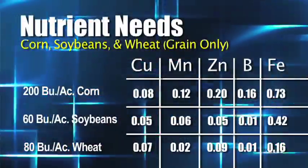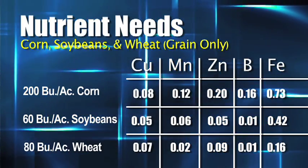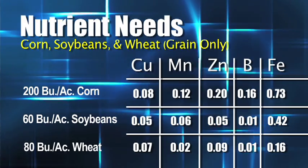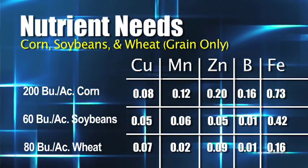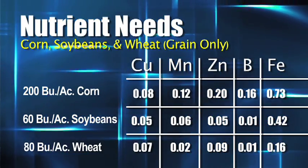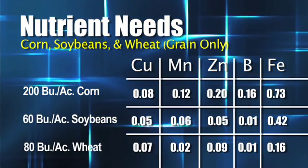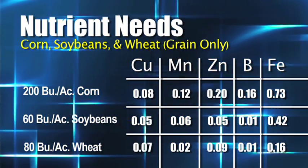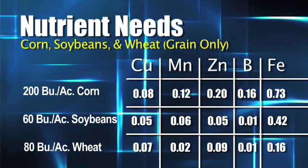Look at this chart showing 200-bushel corn versus 60-bushel beans versus 80-bushel wheat, and what we actually pull out when we remove the grain — what the grain actually takes to produce in terms of micronutrients. If you add all these up, you get one or two pounds of micronutrients total, so it's not like we need a huge amount.